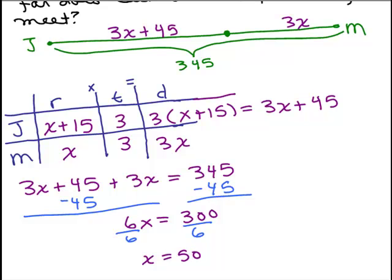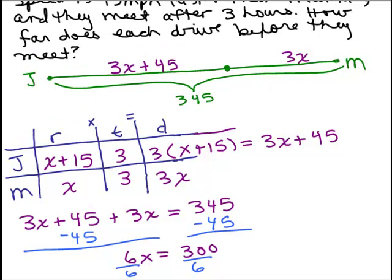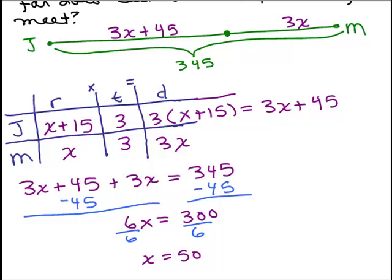Okay, so now we have to remember, what did x stand for? Well, we look in this chart where we defined x right here. That was Maria's rate. And by the way, if you look at the question, it didn't ask for her rate. It says, how far does each drive before they meet? But in order to get that, we're going to need to know her rate. So, it looks like her rate's 50.